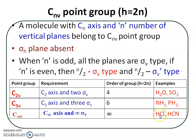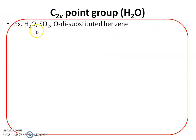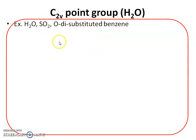Water belongs to the C2V point group. Other examples are sulfur dioxide, ortho-disubstituted benzenes such as ortho-dichlorobenzene and ortho-difluorobenzene. So ortho-disubstituted benzene is an example of the C2V point group.